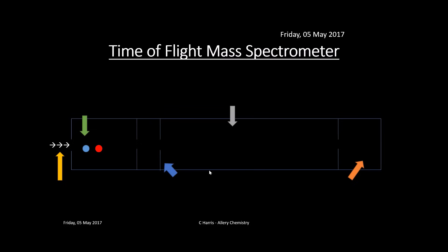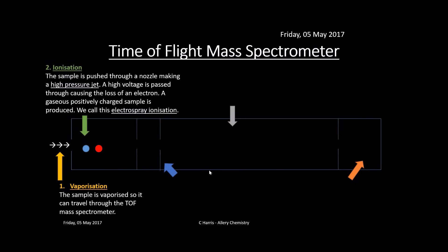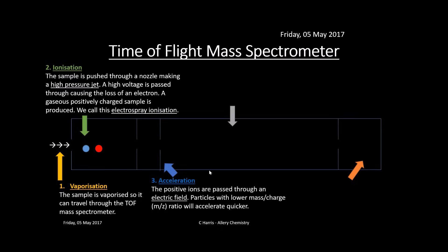The time of flight mass spectrometer: first, the sample is vaporized so it can travel through the instrument as a gas. Then it's ionized using electrospray ionization — the sample is sprayed through a high-pressure jet, like putting your thumb over a hosepipe, and a high voltage is passed through it, causing the loss of an electron, producing a gaseous positively charged sample. This ionization is essential for the next stage — acceleration — where the particles are accelerated by negatively charged plates in an electric field. Particles with a lower mass-to-charge ratio (m/z) accelerate more quickly.